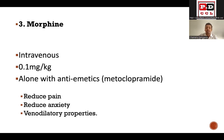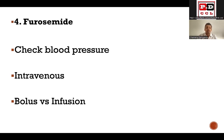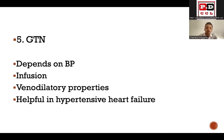Morphine needs to be given with antiemetics like metoclopramide. The drug of choice in acute pulmonary edema is frusemide. You need to check the blood pressure as frusemide might drop it. It is given intravenously as repeated boluses or as a frusemide infusion - there is not much difference between the two, but if the blood pressure is on the lower side, infusion might be a better option as it may not dramatically lower blood pressure. Nitroglycerin is also a good drug - it dilates vessels, reduces afterload, and is given as an infusion with venodilatory properties, particularly helpful in patients with hypertensive heart failure.